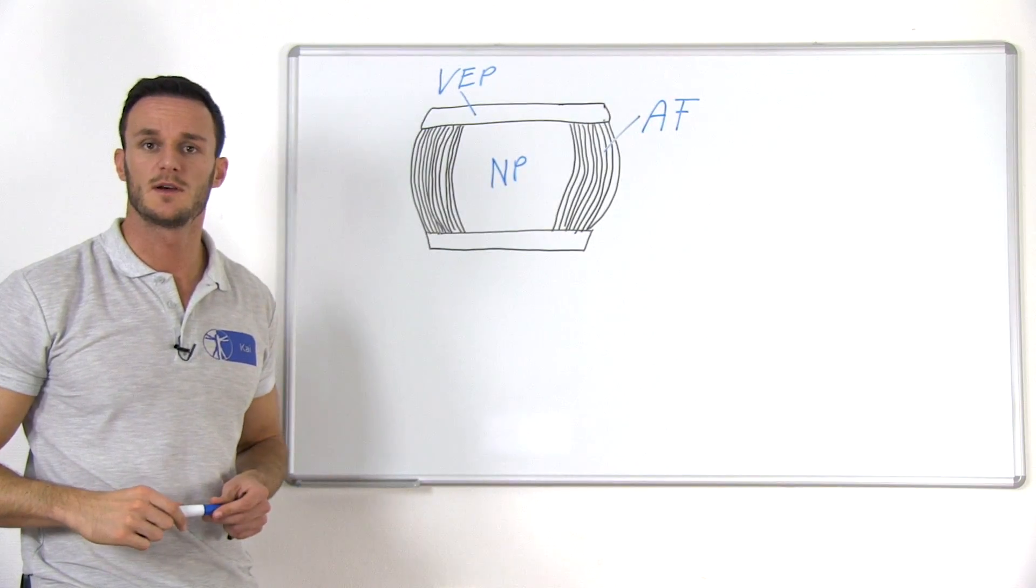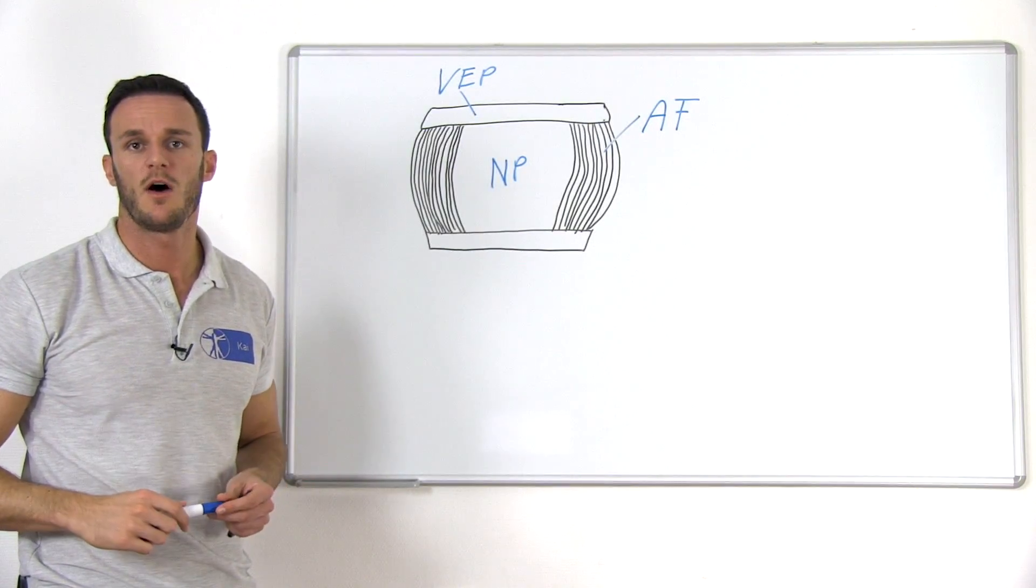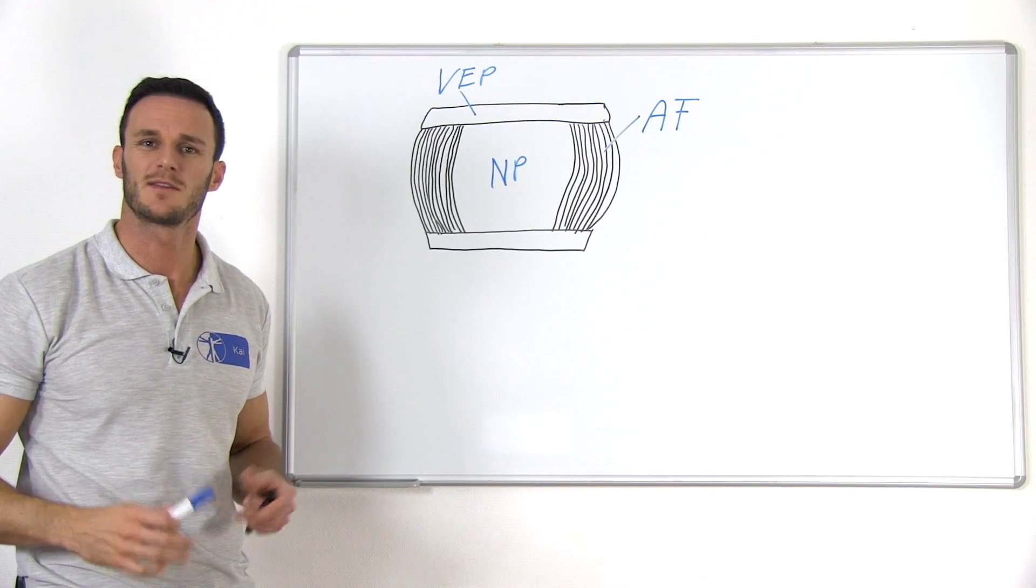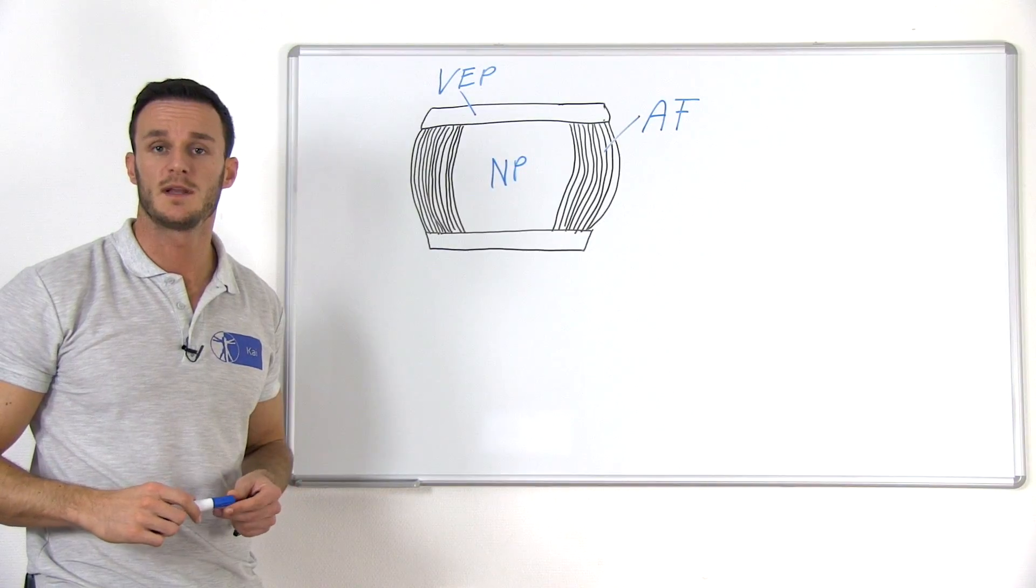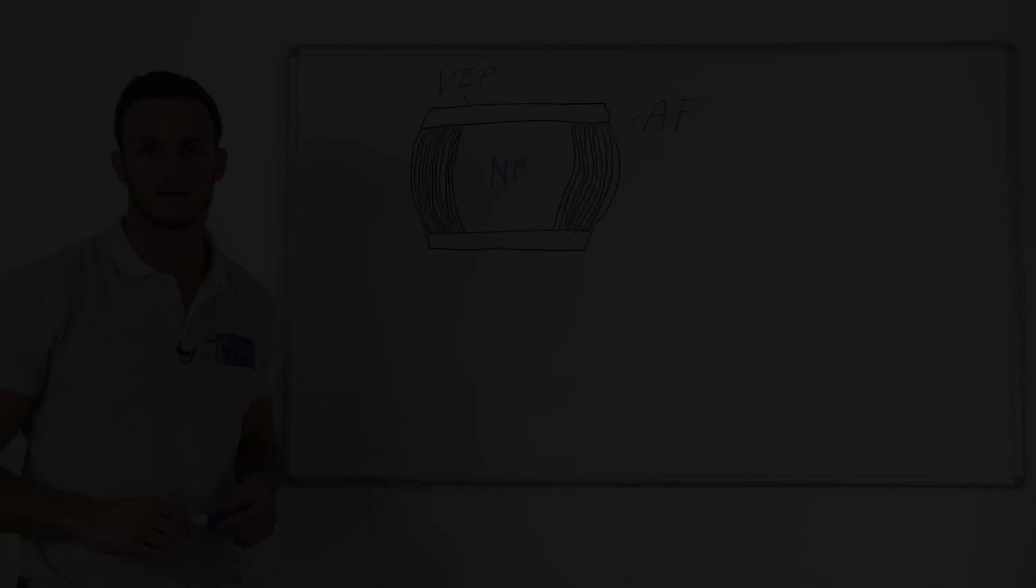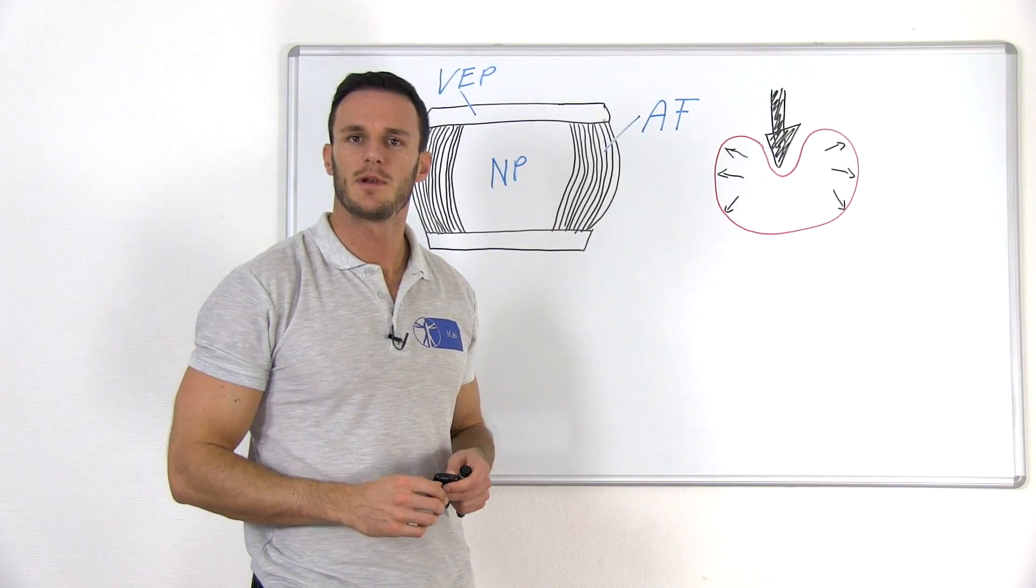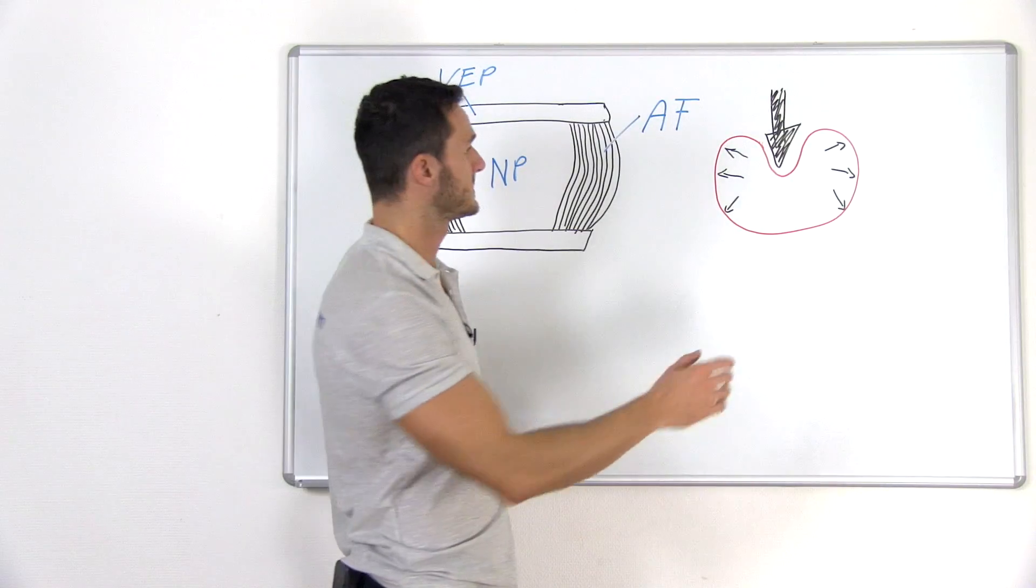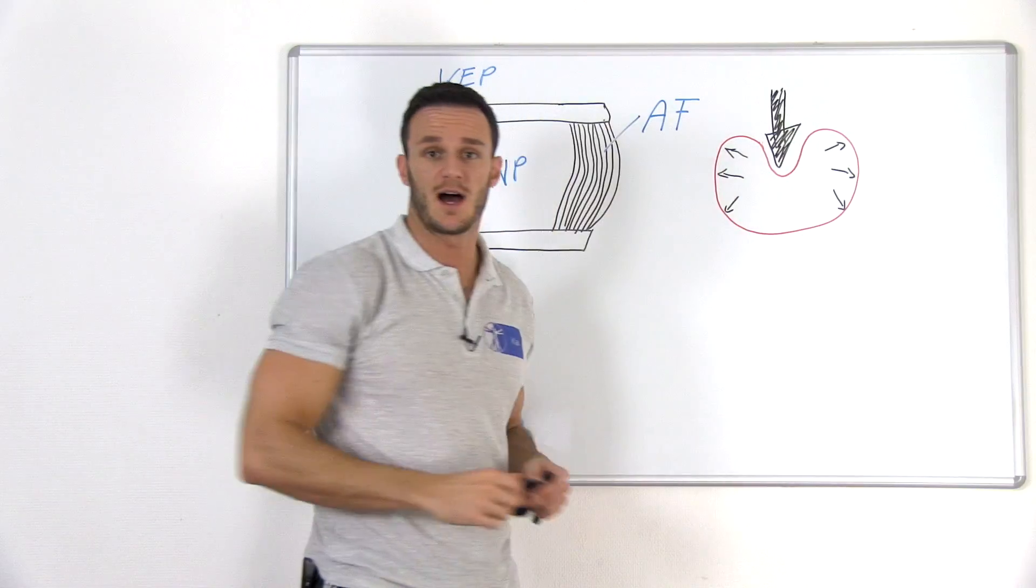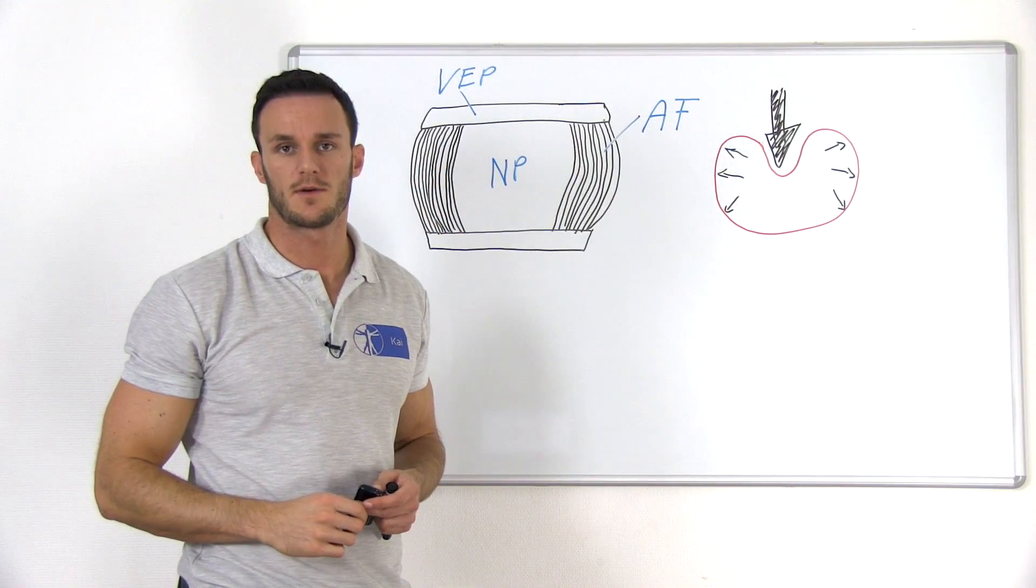In healthy adults, the nucleus is a semi-fluid mass of mucoid material, much like toothpaste. Its fluid-like nature lets it be deformed, but its volume cannot be compressed. You can imagine it like a balloon filled with water. Compression of the balloon deforms it and stretches the outer walls of the balloon in all directions.